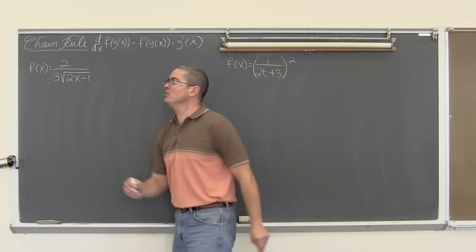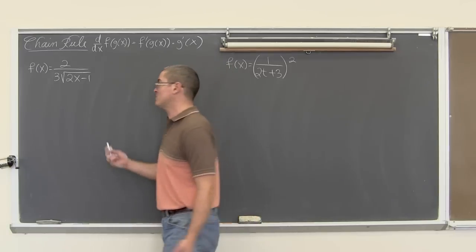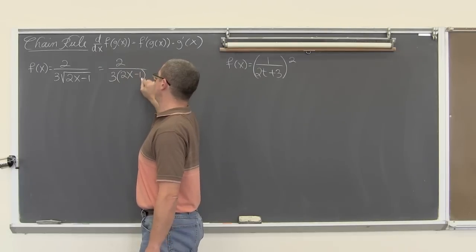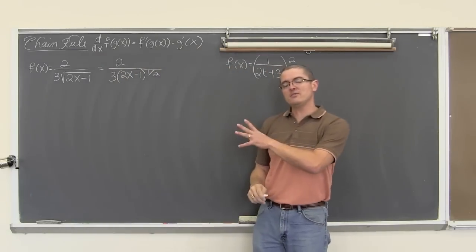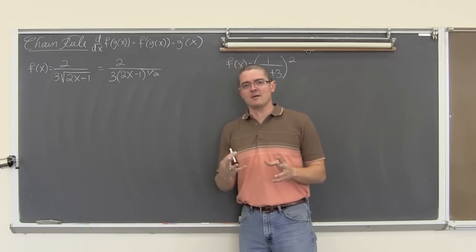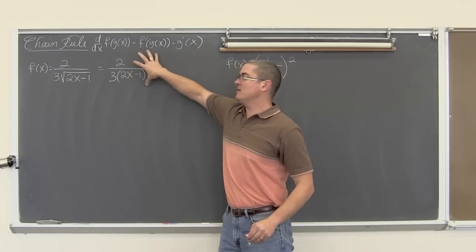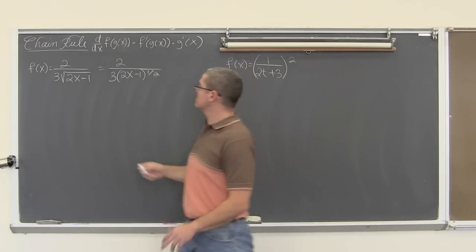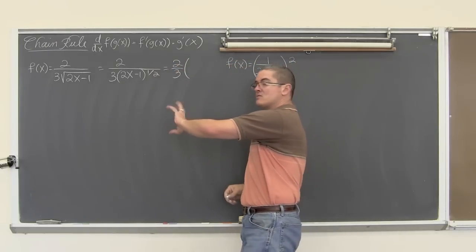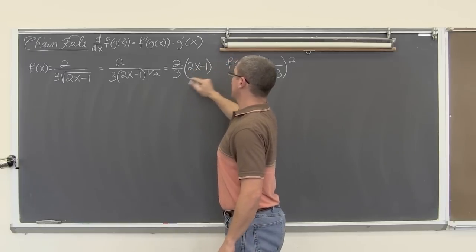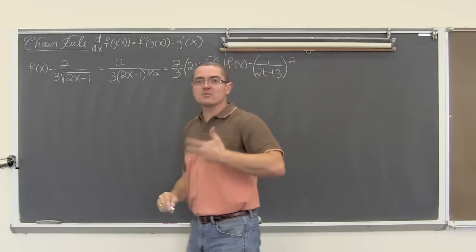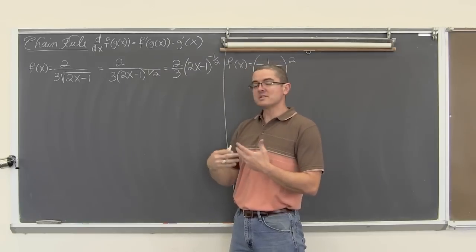For our next two examples we have f equal to 2 over 3 times the square root of 2x minus 1, which we immediately change to 2 over 3 times (2x minus 1) to the one half power. I don't want to use the quotient rule, so I bring the binomial in the denominator up and write it as two thirds times (2x minus 1) to the negative one half. This is another step using the general power rule.